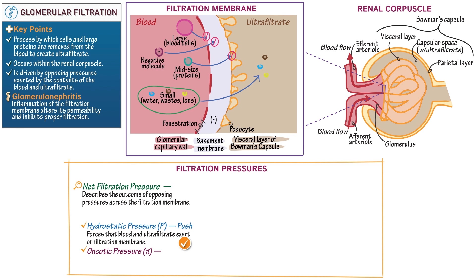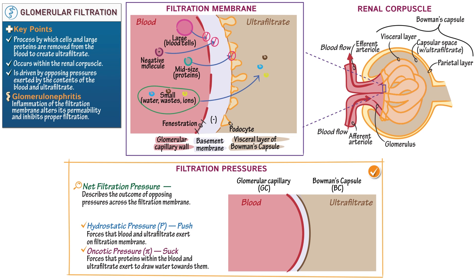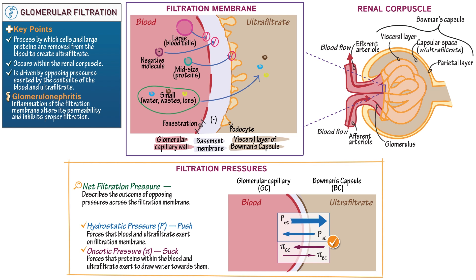Oncotic pressures, also referred to as colloid osmotic pressures, are the forces that proteins within the blood and ultrafiltrate exert to draw water towards them — they suck fluid through the filtration membrane. To visualize these opposing forces, redraw a simplified version of the filtration membrane. Then show that the hydrostatic pressure within the capillary is greater than the hydrostatic pressure within Bowman's capsule. And show that the oncotic pressure within the capillary is greater than the oncotic pressure within Bowman's capsule because the filtration membrane prevents passage of proteins into Bowman's capsule.